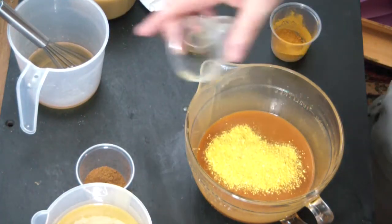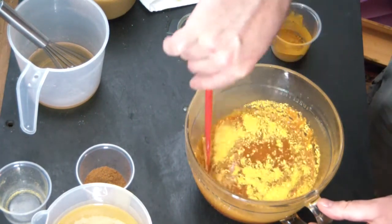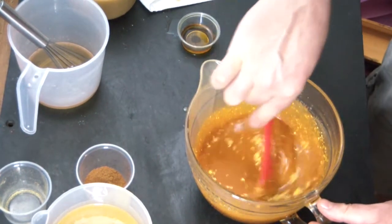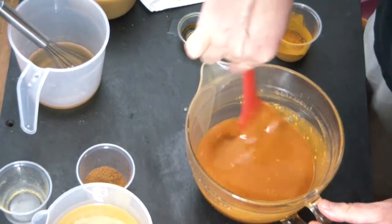I decided to go ahead and add in the yellow French clay to try to temper that orange because the turmeric can tend to have a red orange.